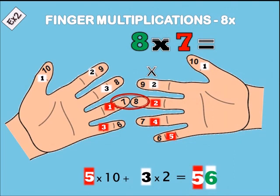Example two: eight times seven. Seven is the ring finger and the middle finger — they meet. Count down: 1, 2, 3, 4, 5 — that means 5 times 10 is 50. On the left hand we have 3, on the right hand we have 2, so 3 times 2 is 6. We have 56.